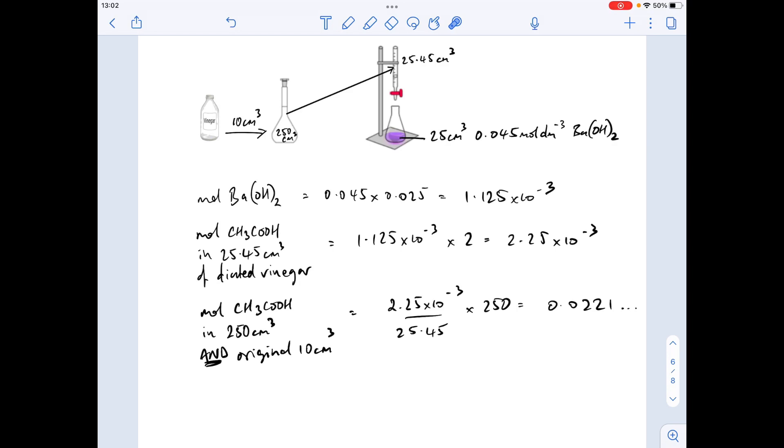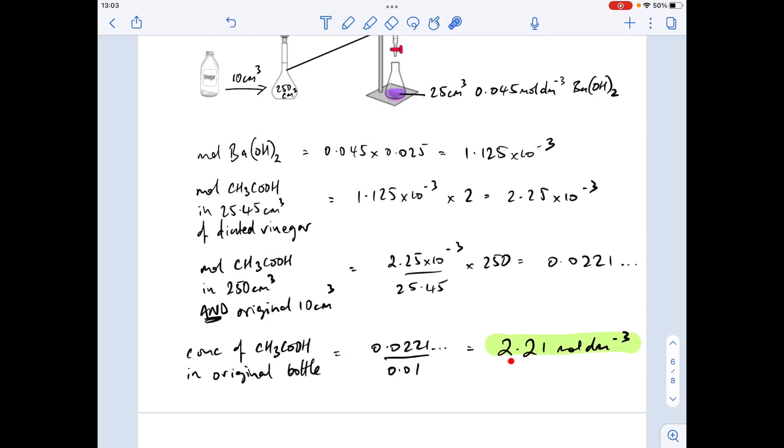So all we need to do now is work out the concentration in moles per decimeter cubed of the ethanoic acid that's in that 10 cm³. So we know there's that many moles in 10 cm³, so if we divide the moles by the volume—but remember the volume has to be in decimeters cubed—it puts it into moles per decimeter cubed. So there's the answer there: 2.21 moles per decimeter cubed.